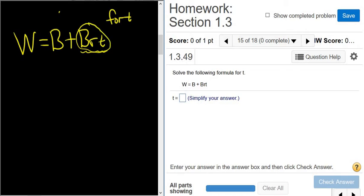So this piece here doesn't have a t. So you first want to get everything that has a t on one side by itself. So we'll start by subtracting big B from both sides. So boom, he's canceled.